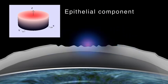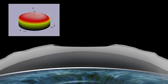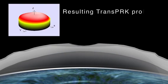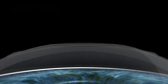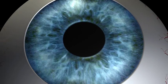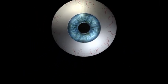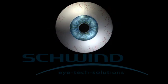TransPRK is a versatile approach. It is useful in all cases where a difficult epithelial flap is expected or when the epithelium covers corneal irregularities of the stromal tissue. Using Amaris TransPRK ablation profiles shortens the overall treatment time, minimizes the risk of corneal dehydration, and speeds up the healing process.